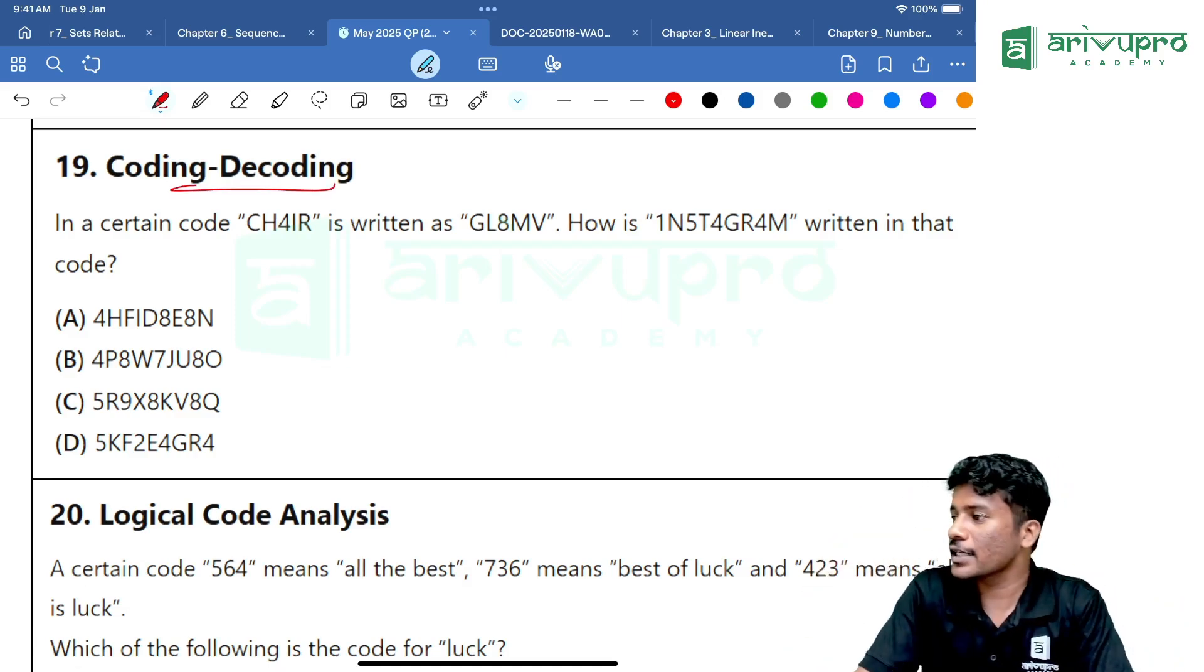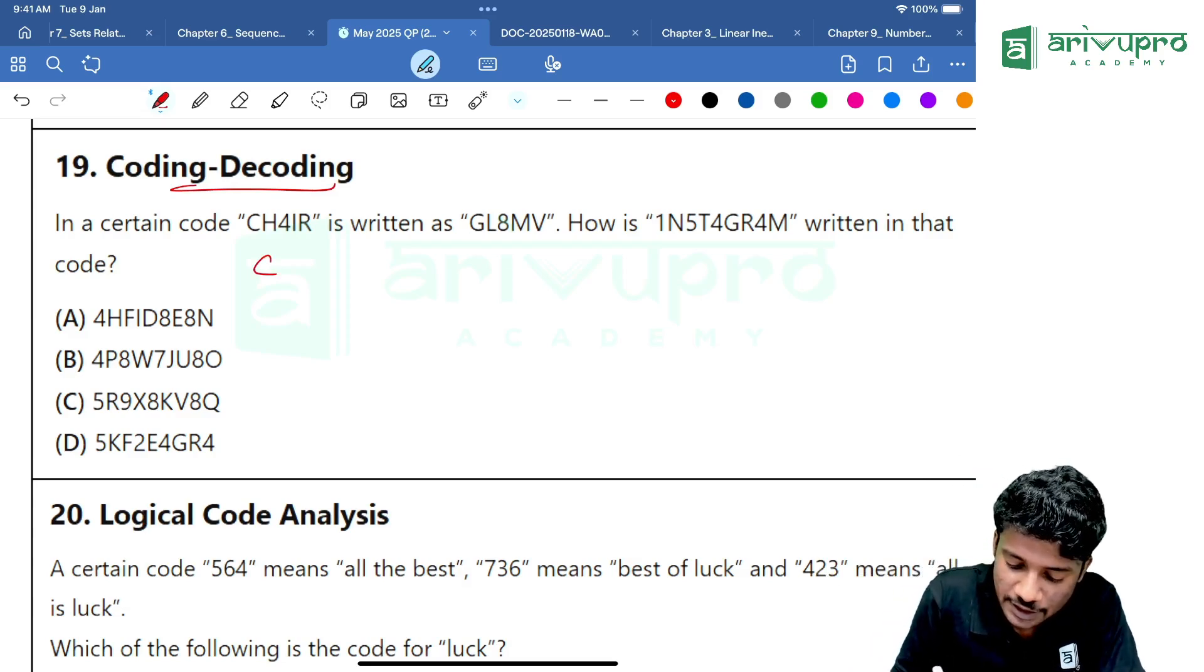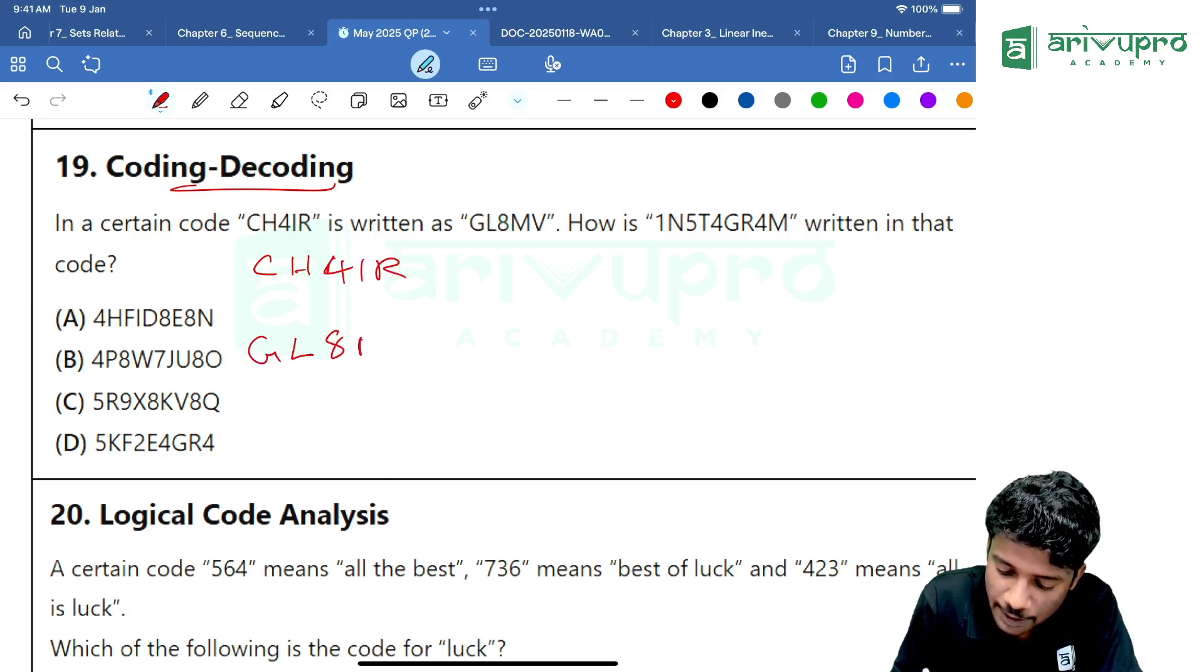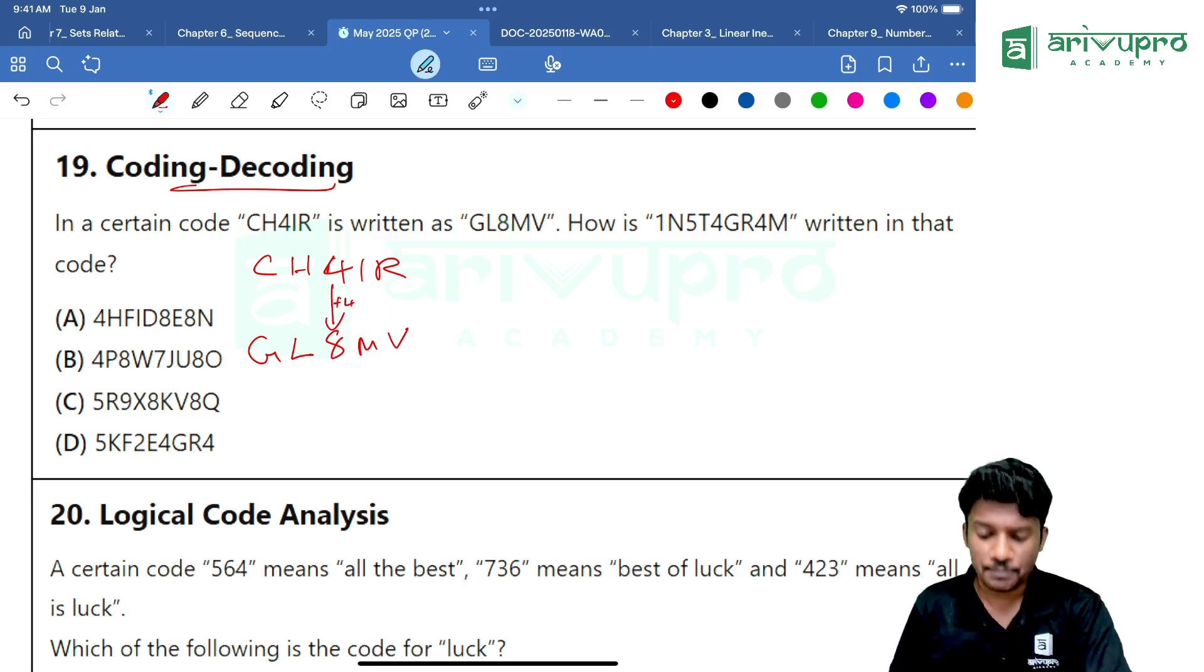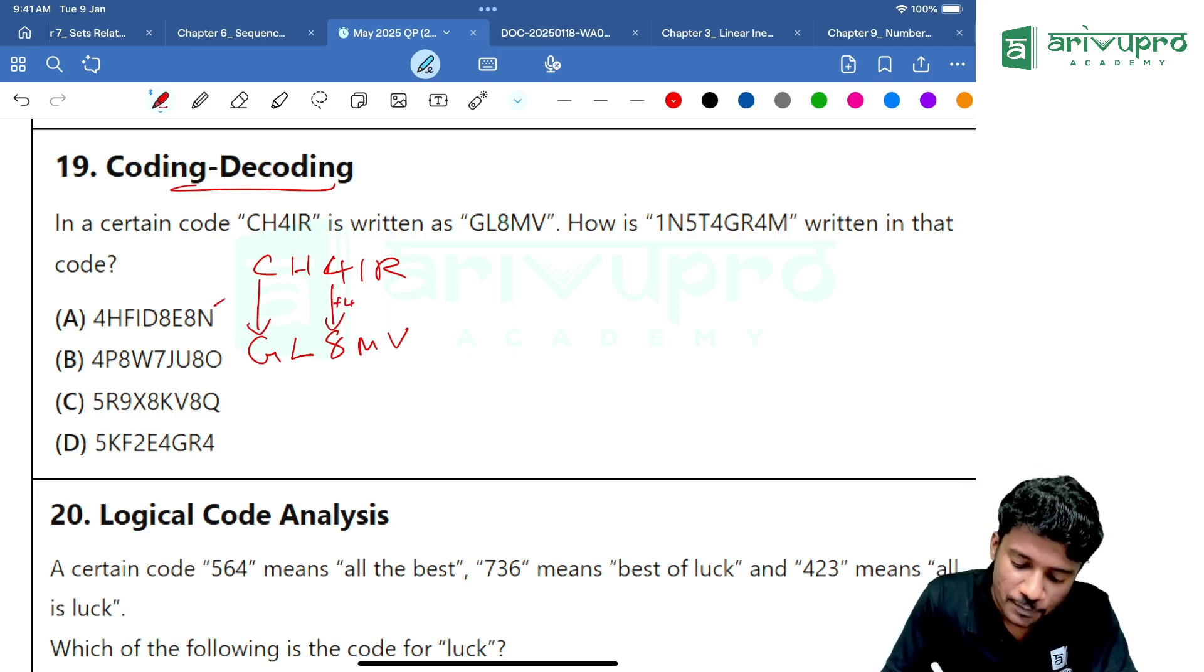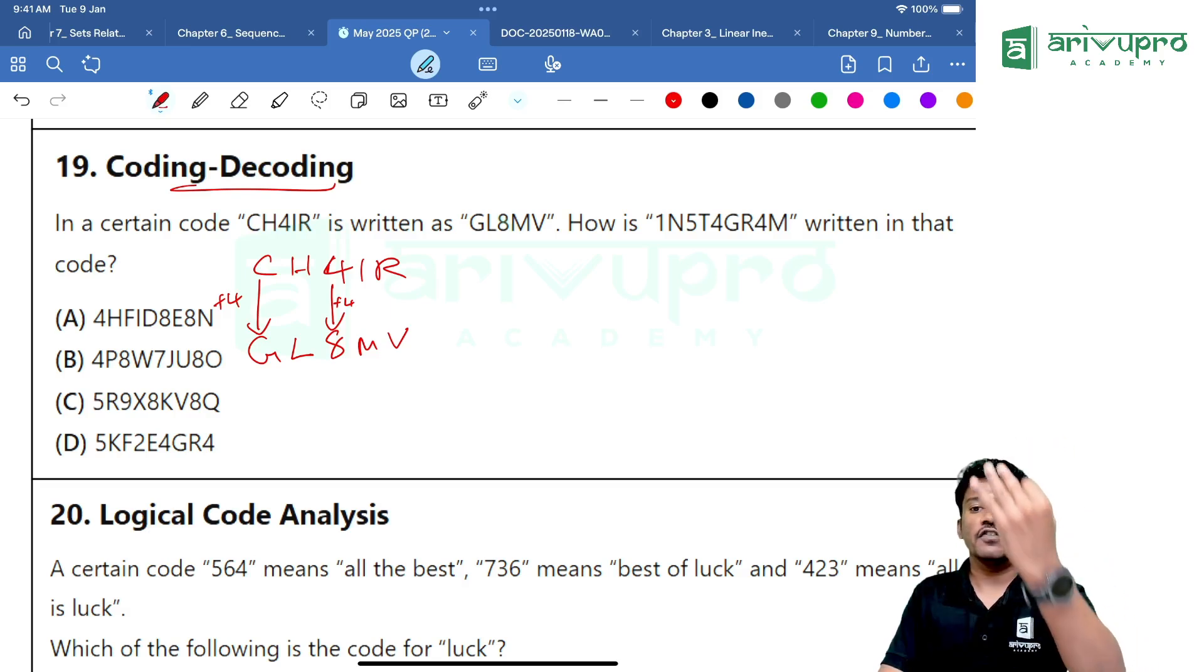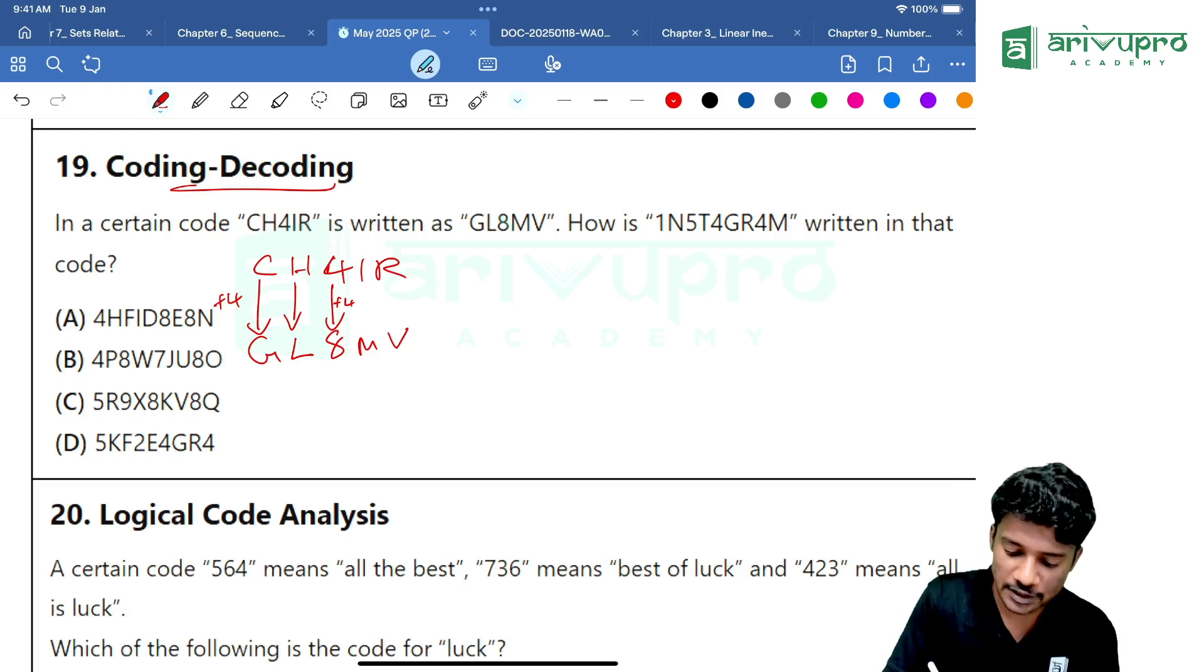Coding and decoding. CHAIR is becoming C-H-A-I-R is becoming G-L-8-M-V. 4 plus 4 is 8. C plus 4 is D, E, F, G. Plus 4 is G. H-I-J-K-L, that means the pattern is plus 4. S-T-U-V, that means plus 4. I-J-K-L-M, plus 4.